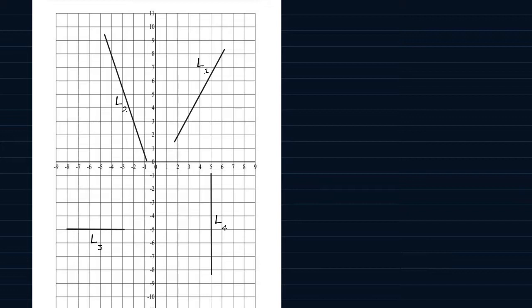I have put here a coordinate grid paper with four lines: L1, L2, L3, and L4. We want to find the gradient of each of the lines.